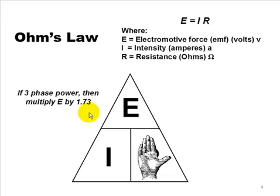This also works for three-phase power, but you've got to multiply E, the voltage, by 1.73. 1.73 is the square root of 3. And the voltage in a three-phase circuit is not 240. It's 240 times 1.73.